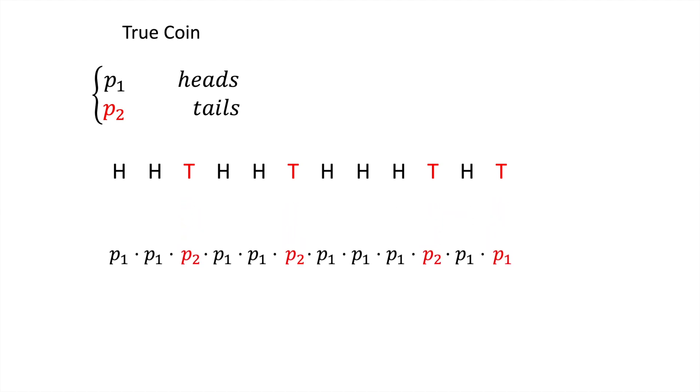Let's now introduce coin 2, which has probabilities q1 and q2 instead. Working out the probability of coin 2 generating the data is done identically, where we just multiply by q1 for each heads and q2 for each tails.